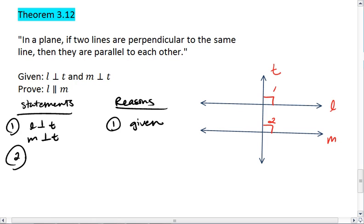I then know that angle 1 and angle 2 are right angles, and this is by the definition of perpendicular lines.